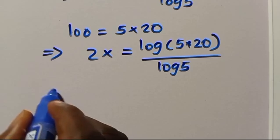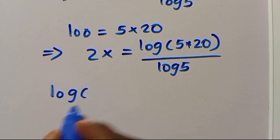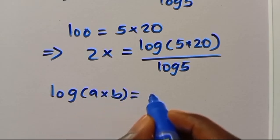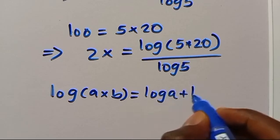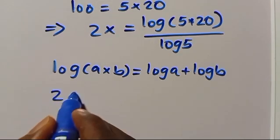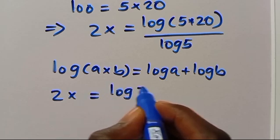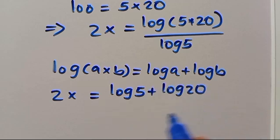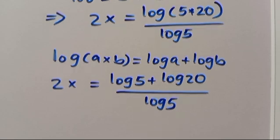Recall that log of a times b equals log a plus log b. So from here we have 2x equals log 5 plus log 20, all over log 5.